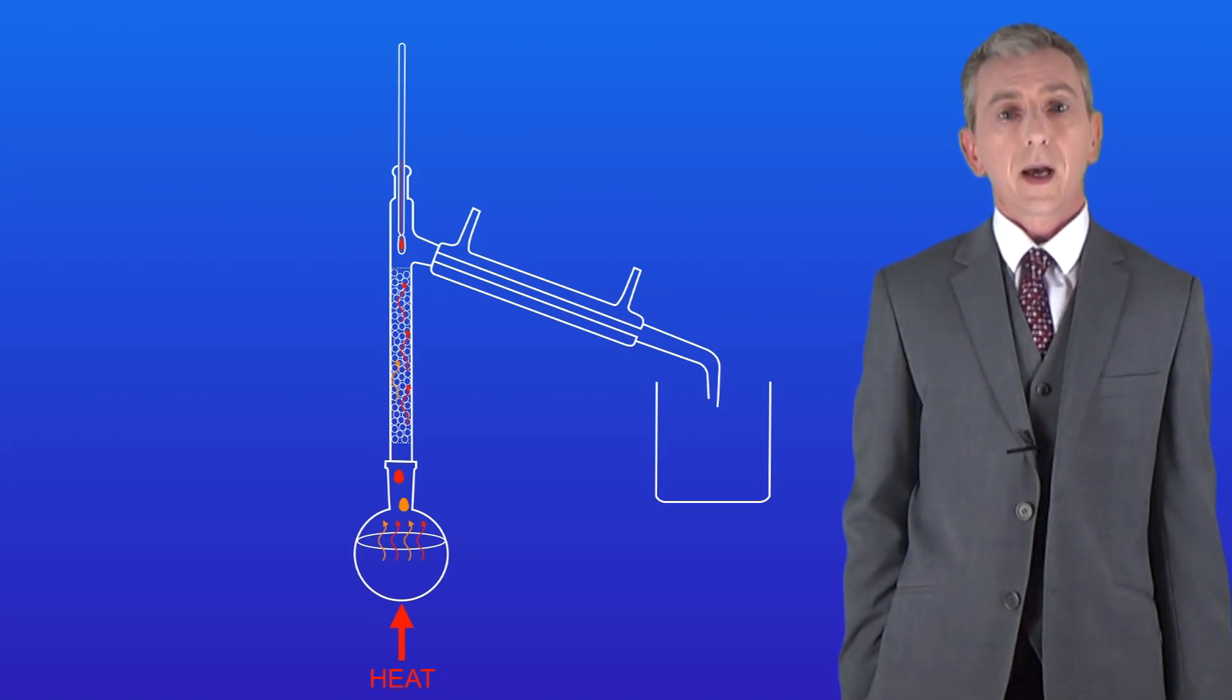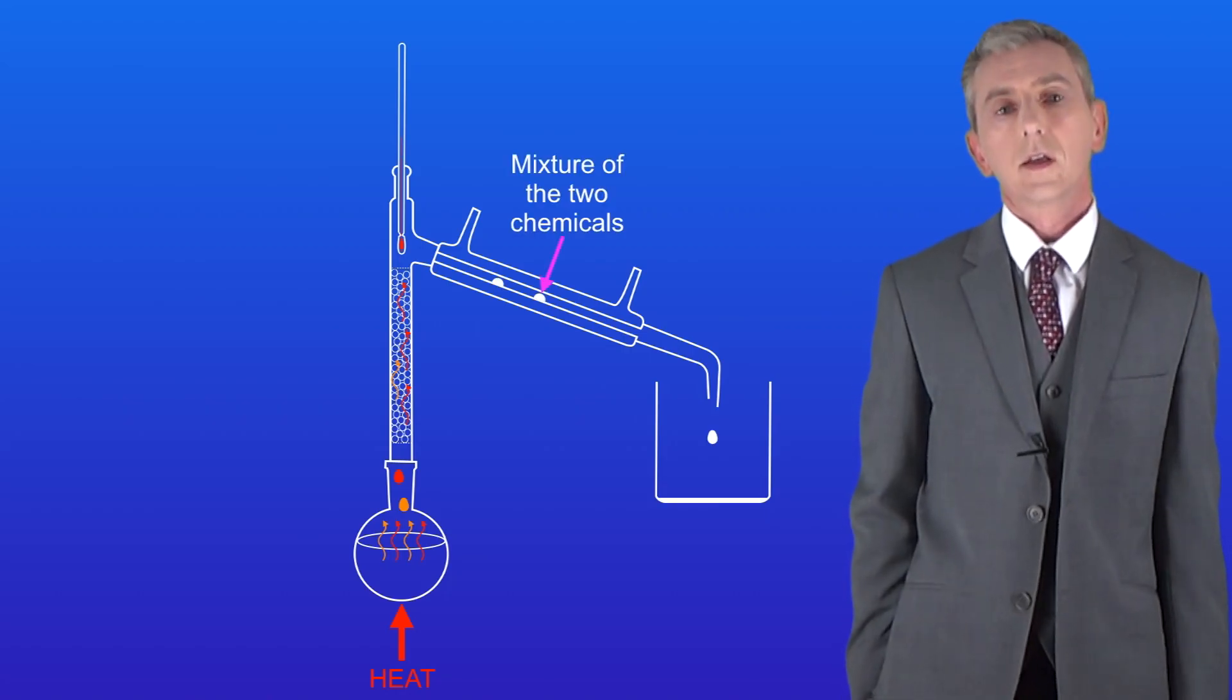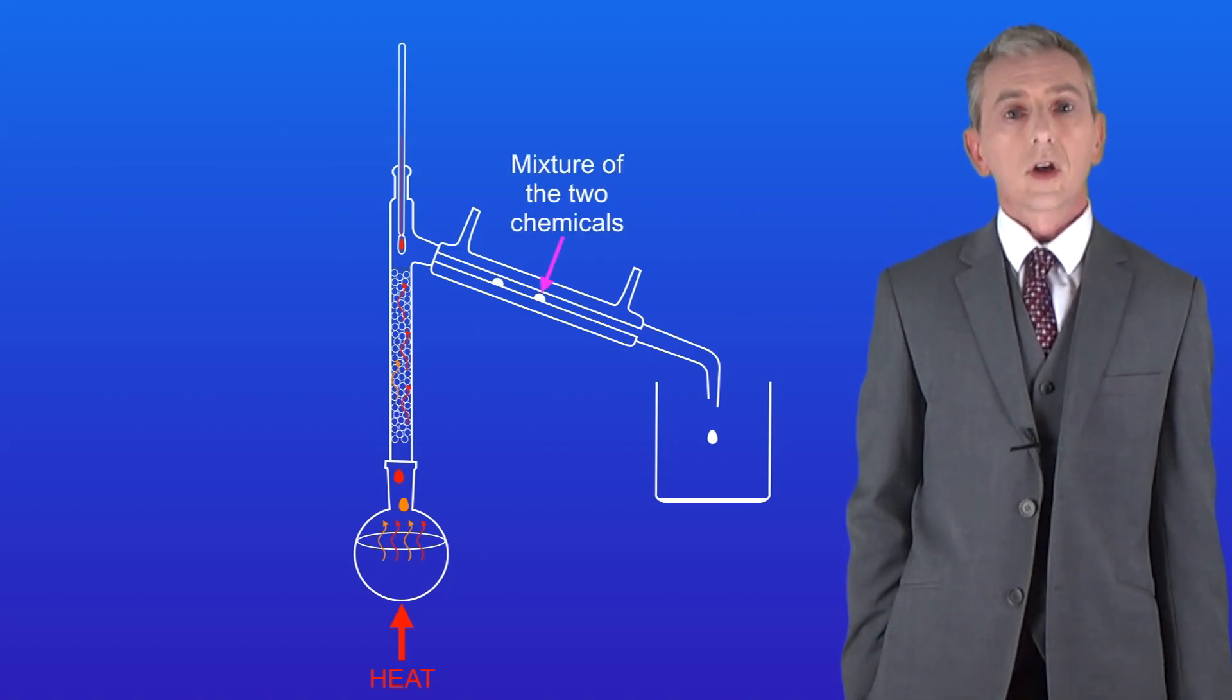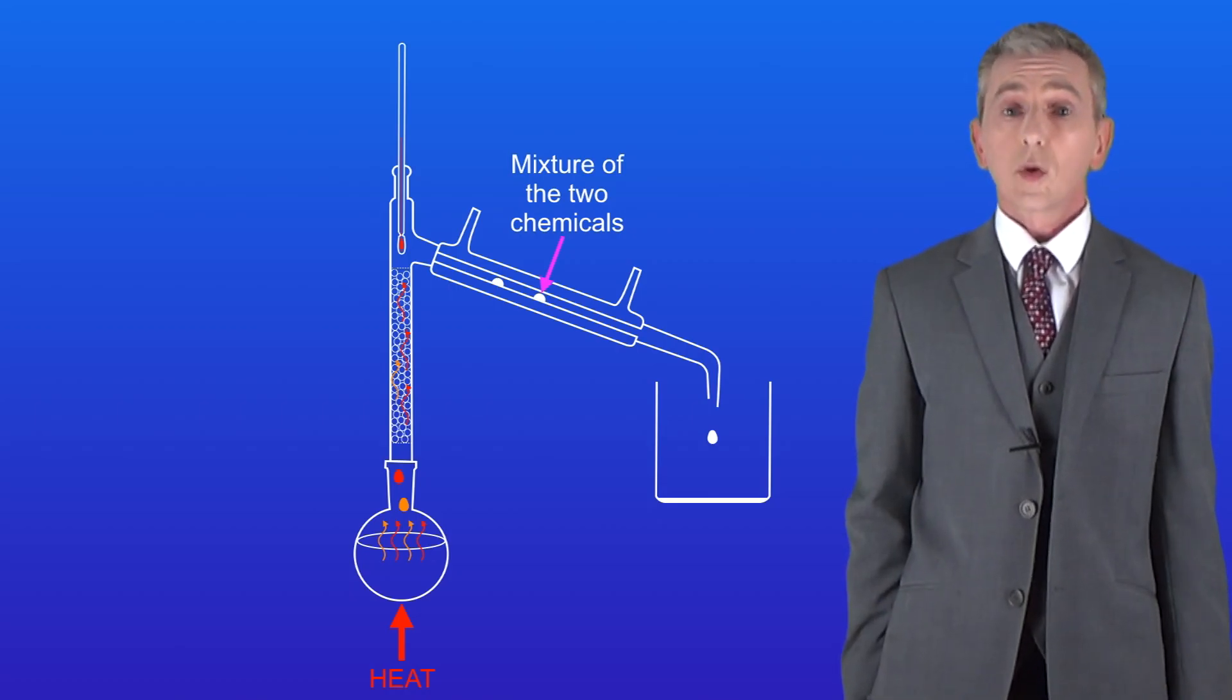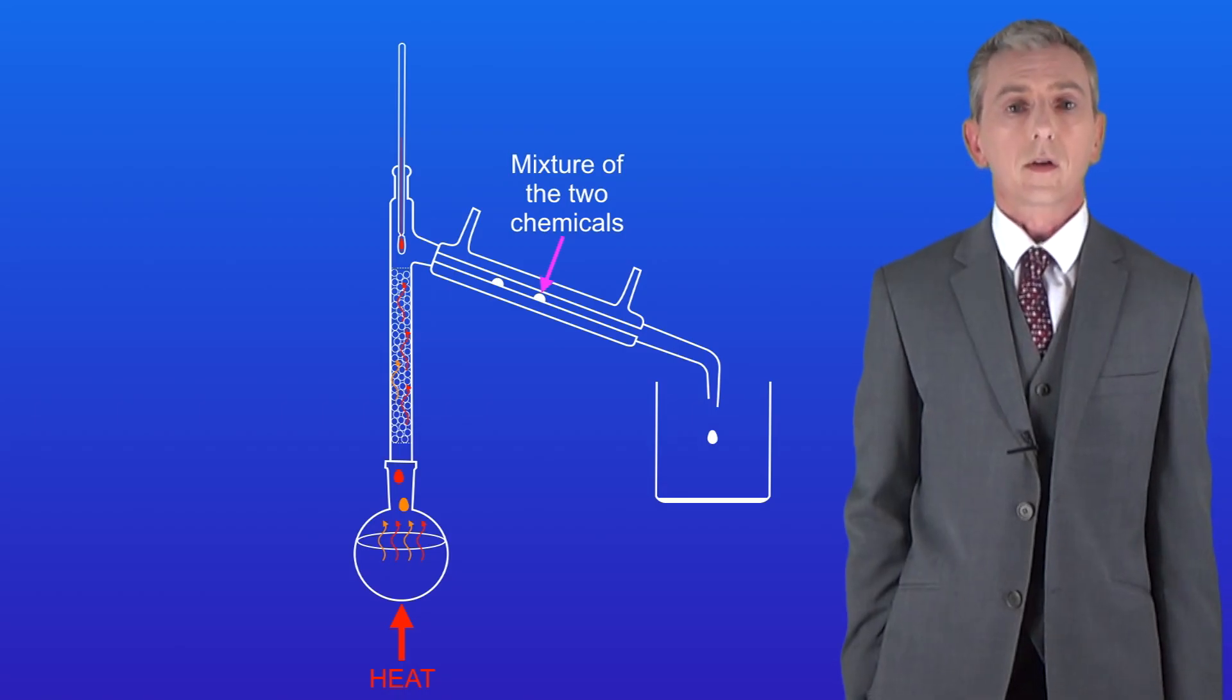As the warm vapors pass up the column they reach the thermometer and the temperature on the thermometer begins to rise. Now this means that a mixture of two different vapors are passing over the thermometer, although the mixture will contain more of the chemical with the lower boiling point.